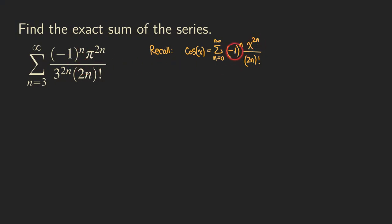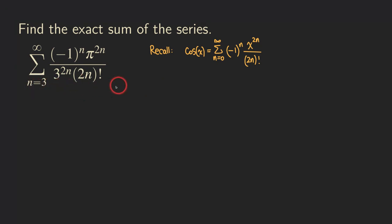Yes, so everything here will match with whatever we have in the Maclaurin series, where x equals pi over 3. There is also another difference: instead of starting from n equals 0, we are starting from n equals 3. So we need to take care of that — we need to make some adjustment regarding the starting of the terms. So let's look at this series and write out a few terms to see what's going on.